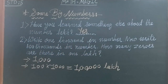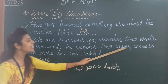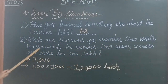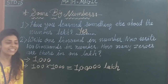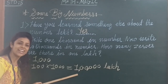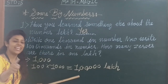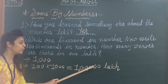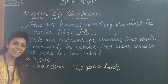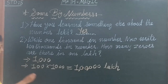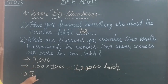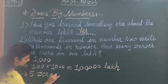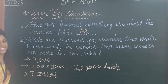Now see the next question: how many zeros are there in one lakh? There are one, two, three, four, five. So we write five zeros in one lakh.